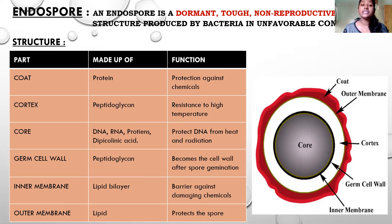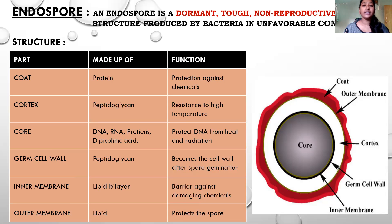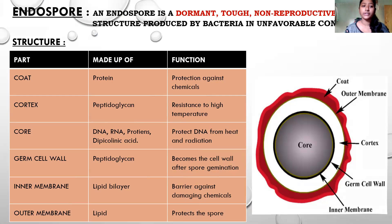The core consists of RNA, DNA, proteins, and dipicolinic acid; its function is to protect DNA from heat and radiation. The germ cell wall is also made up of a peptidoglycan layer and it becomes the cell wall after spore germination. The inner membrane is a lipid bilayer and acts as a barrier against damaging chemicals. The outer membrane is made up of lipid and its function is to protect the spore.